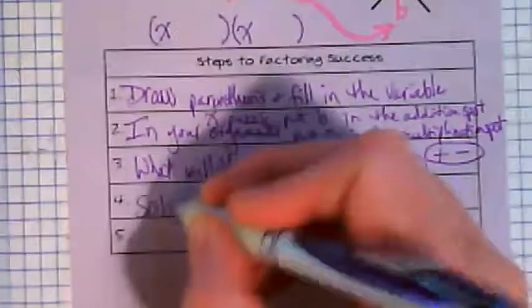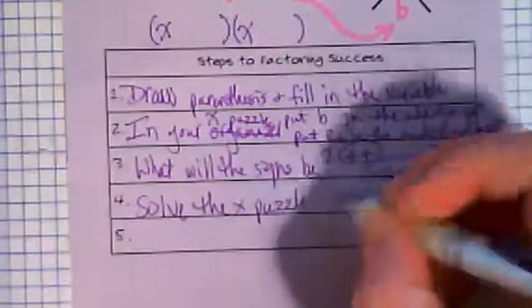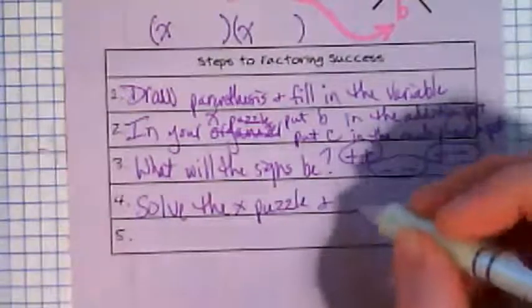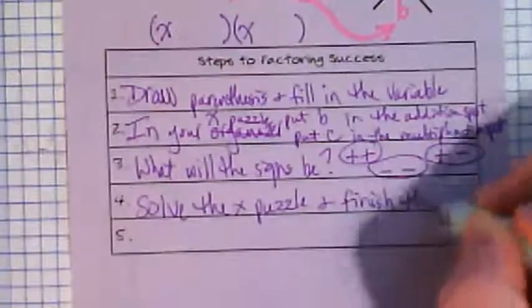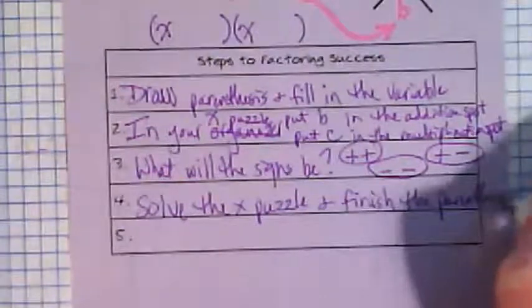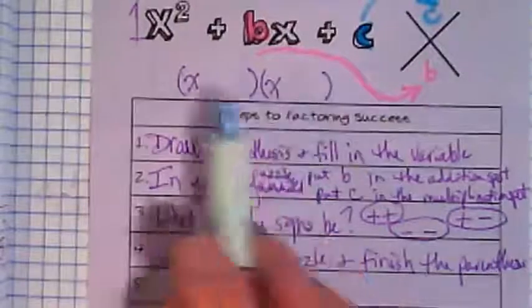Step four is you're going to solve the X puzzle and put the answers in the parentheses. So we're going to finish the parentheses. Basically, we're going to use this puzzle up here to come up with what the terms should be to finish up these two factors. And then we're going to check our work with the box.